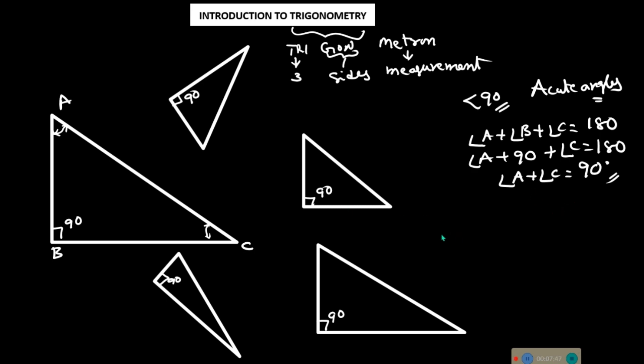Now you come to know that in a right angle triangle, which we will be using for the entire geometry — mostly all our ratios and angles — A and C are the acute angles, and we have the 90 degrees angle at B.